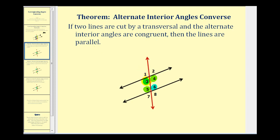So in this case, if angle three is congruent to angle six, or if angle four is congruent to angle five, the lines would be parallel. And we'll prove this in another video.